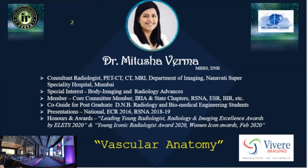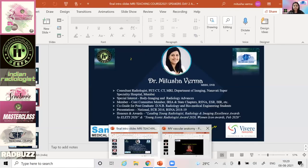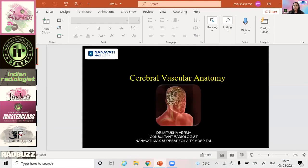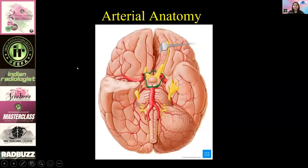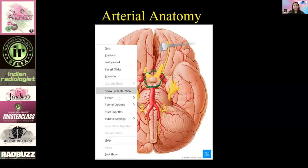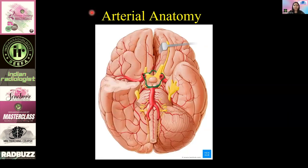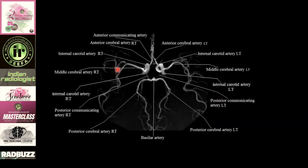As we all know, the most important thing when we start our radiology practice, and even when we practice later on, are stroke patients — and sometimes they can still be confusing even though the anatomy looks simple. Let's begin with this talk on cerebral vascular anatomy. When we talk of vascular anatomy, it has to be arterial and venous. For arterial anatomy, the main focus intracranially is the circle of Willis.